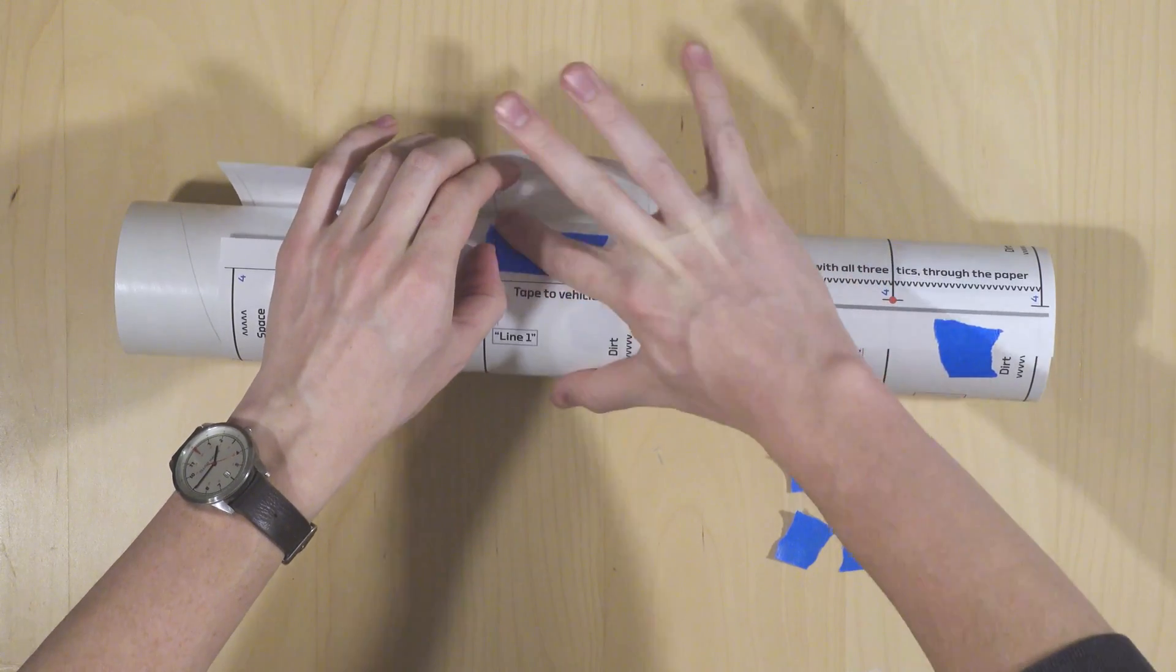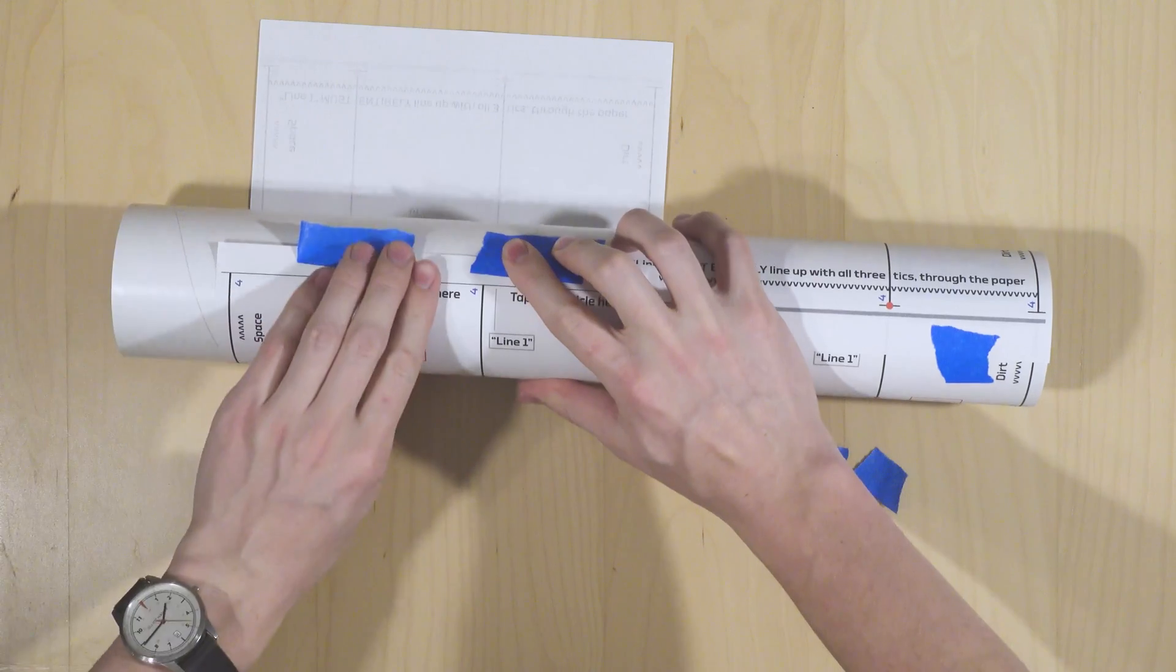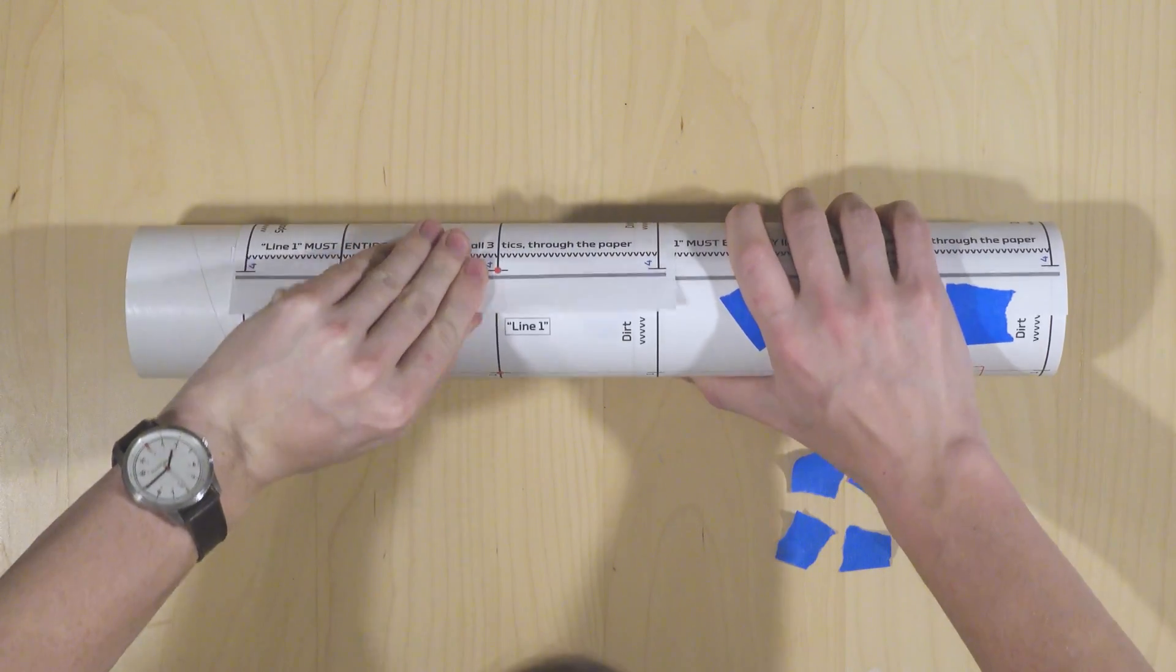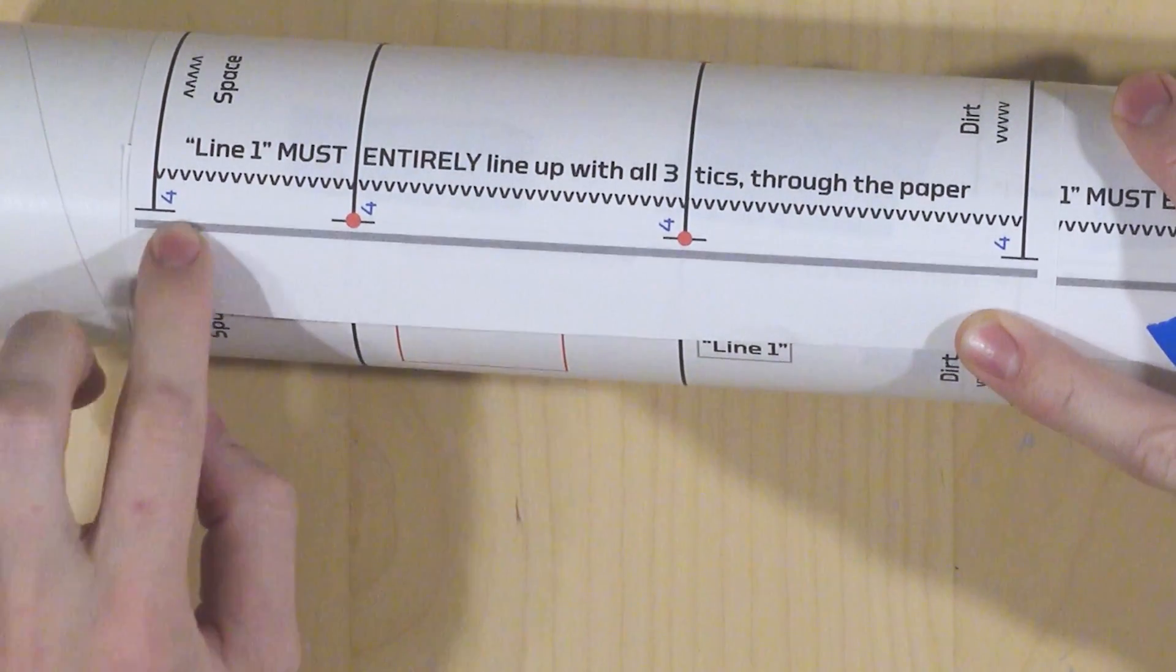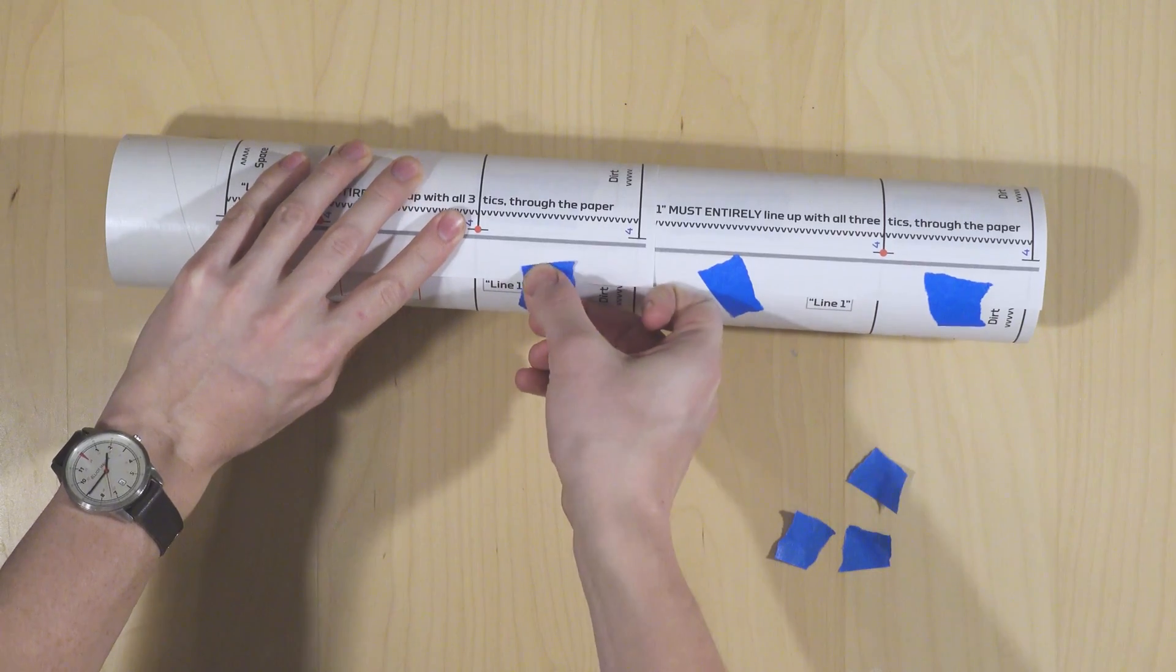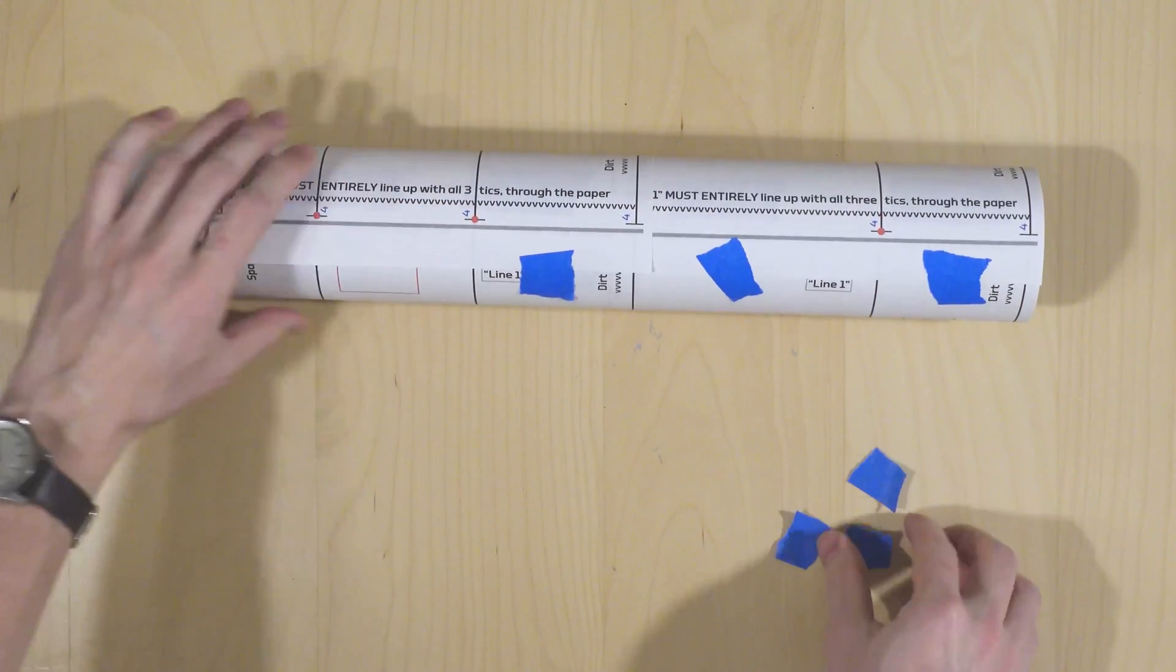Like before, add the tape where it says tape to vehicle here, and wrap it around the rocket. Just like last time, we're looking to see that line through those ticks, except instead of 3 of them, there are now 4. Once that's all set and lined up, you can go ahead and tape it down.